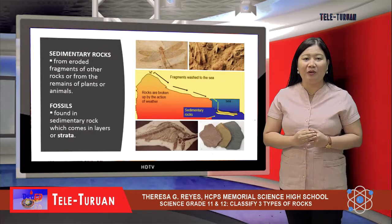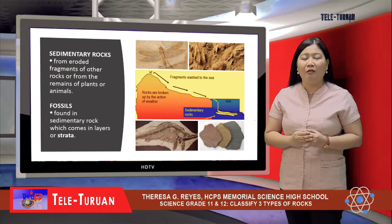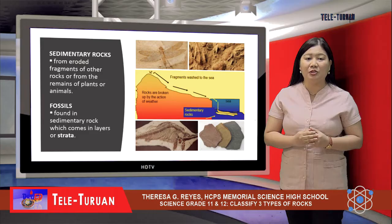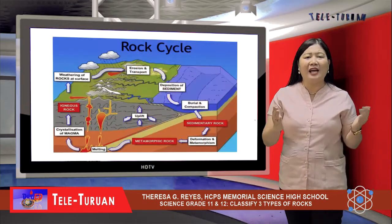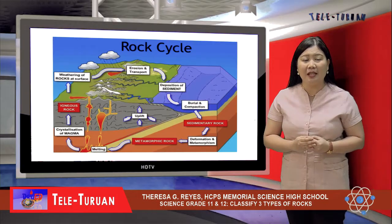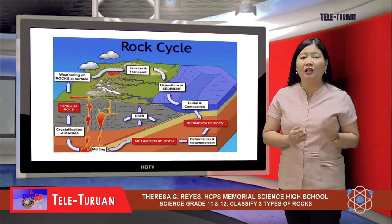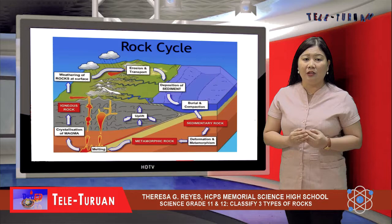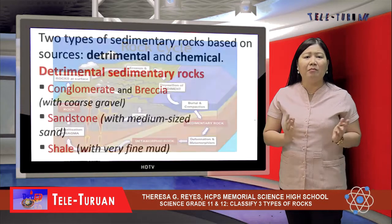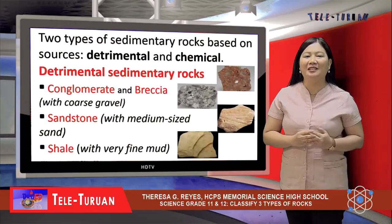The second type of rock is sedimentary. Sedimentary rocks are formed from eroded fragments of other rocks or from the remains of plants or animals. Fossils are most frequently found in sedimentary rock, which comes in layers called strata. In the rock cycle, sediments result from the uplifting and weathering, which are then transported and deposited in different areas. Sediments are transformed into solid sedimentary rock through processes of lithification, compaction, or cementation. Based on their sources, there are two types of sedimentary rocks: detrital and chemical.